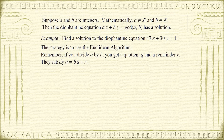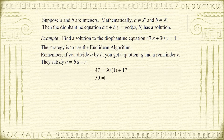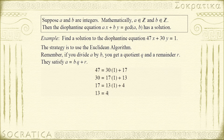We begin by dividing the larger number 47 by the smaller integer 30, and perform the Euclidean algorithm. Dividing 47 by 30 gives a quotient of 1 and a remainder of 17. Then we take 30 and divide by the previous remainder 17, getting a quotient of 1 and a remainder of 13. Next, dividing 17 by 13 gives a quotient of 1 and a remainder of 4. Finally, dividing 13 by 4 gives a quotient of 3 and a remainder of 1. We stop here because we've arrived at the greatest common divisor — the Euclidean algorithm is complete.